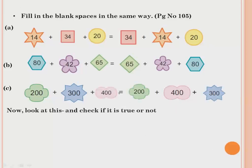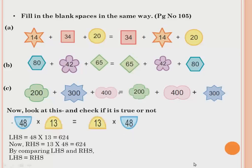Now look at this and check if it is true or not. They are asking: 48 multiplied by 13 equals 13 multiplied by 48. We take the LHS and RHS and check if they are equal. LHS: 48 multiplied by 13 is 624. RHS: 13 multiplied by 48 is also 624. By comparing, both are equal — the same numbers 48 and 13 are just placed in a different order, so it is true.